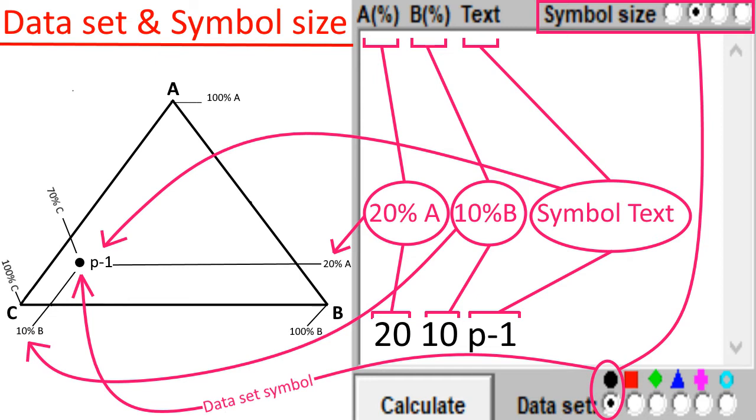The default size of all symbols can be changed using the radio buttons located above the upper right side of the data entry text field. A new data set consisting of different symbols can be started by selecting a different radio button located below the lower right side of the data entry text field.